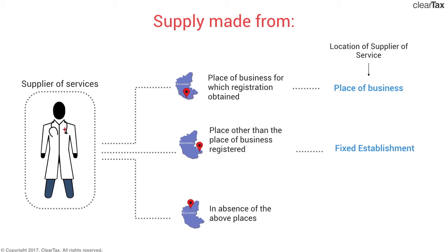In the absence of any such place — that is, you have not obtained registration and you do not have a fixed establishment — then the location would be the usual place of residence of the supplier. So you have three places which could turn out to be the location of supplier of services: the place of business, fixed establishment, and usual place of residence.